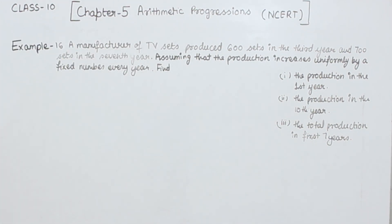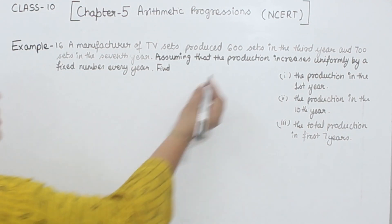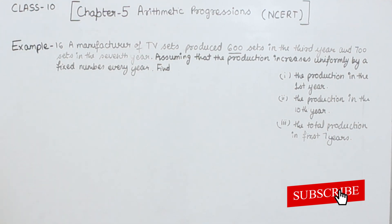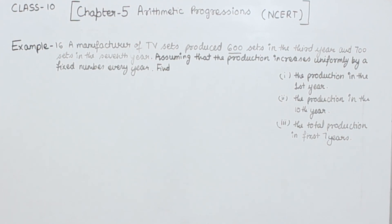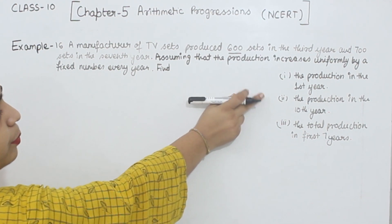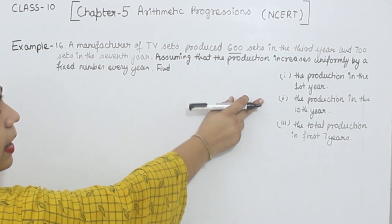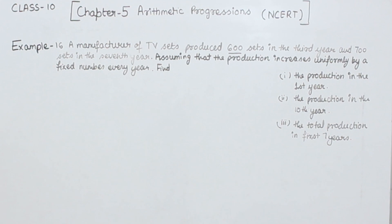Example number 16 says: a manufacturer of TV sets produces 600 sets in the third year and 700 sets in the seventh year. Assuming that the production increases uniformly by a fixed number every year, we have three parts. First, find the production in the first year. Second, find the production in the tenth year. Third, find the total production in the first seven years.